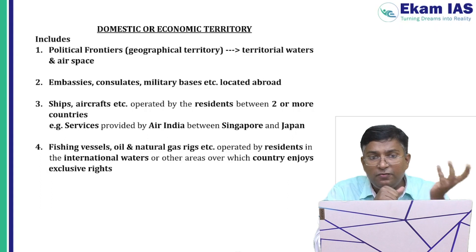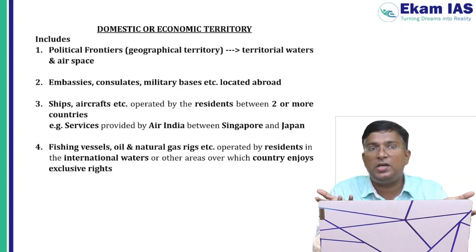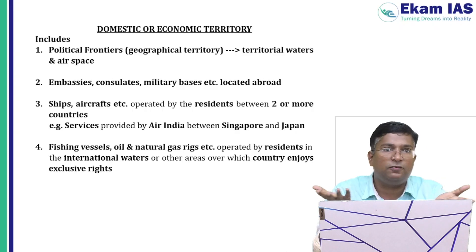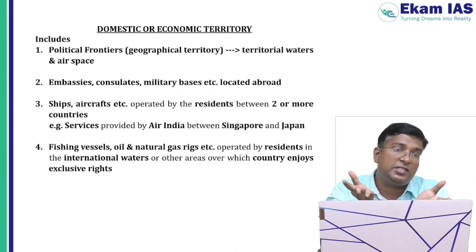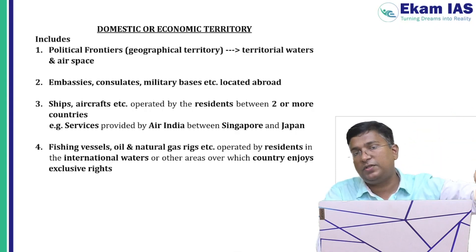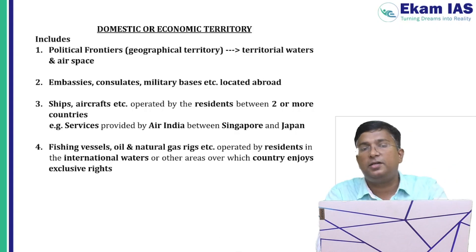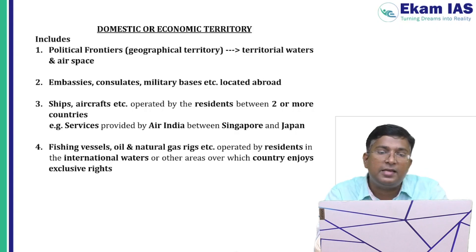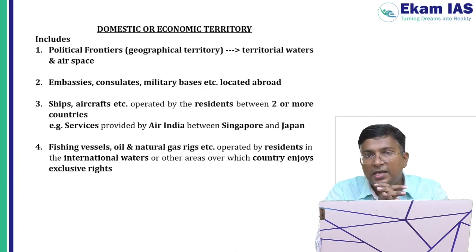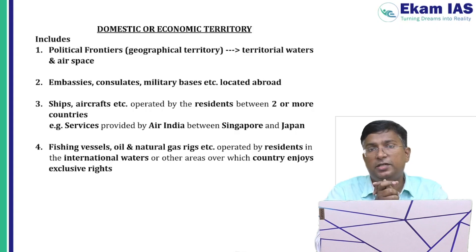Next, fishing vessels operated by residents in international waters are also included. If a vessel is in India's territorial waters it automatically falls under the first category — political frontier. But in international waters, beyond territorial waters, a fishing vessel still counts as domestic territory. Similarly, oil and natural gas rigs in international waters operated by residents are also part of domestic territory.